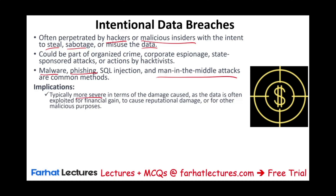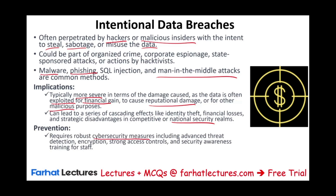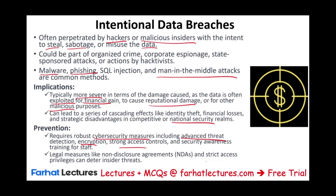The implications of intentional breaches are more severe because someone is intentionally trying to harm you — the data is often exploited for financial gain, to cause reputational damage, or for some other malicious purpose. This can lead to cascading effects like identity theft, financial losses, competitive disadvantage, or national security threats. Prevention requires robust security measures including advanced threat detection, encryption, strong access control, security awareness, and legal measures like non-disclosure agreements.